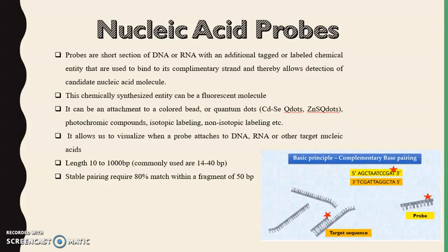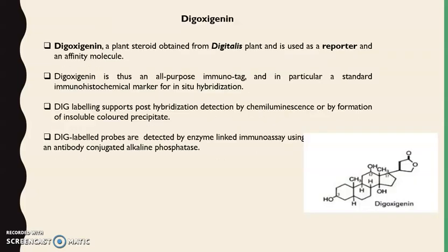In the continuation of my previous video, we will talk about the non-isotopic method of labeling. The second method used as a non-isotopic method is the use of digoxigenin, which is a plant steroid obtained from a digitalis plant and is used as a reporter and an affinity molecule.